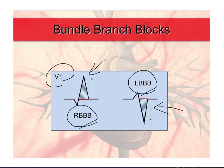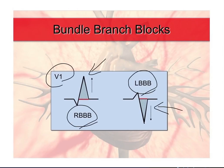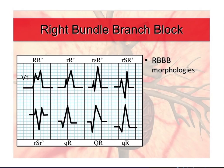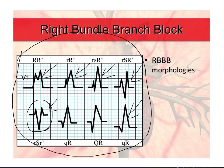I taught you the turn signal method to remember that. If you push up on your turn signal, you're turning to the right, and if you push down, you're turning to the left. Using that method you can identify the different morphologies of a right bundle branch block in V1. Notice all of these have a positive terminal wave. The last wave of the QRS complex is upright and positive — even this one, which is mostly negative, but the last wave is positive.